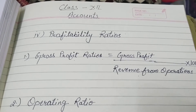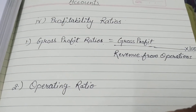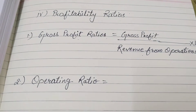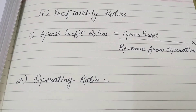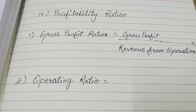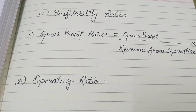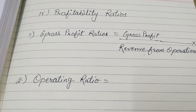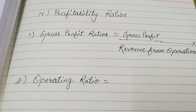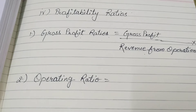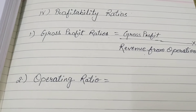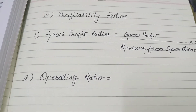Now the next ratio is the operating ratio. This ratio talks about the relation between the cost of revenue from operations — that is, what was the operating cost — and the revenue from operations. In other words, how much cost did we incur and how much revenue did we collect from operations.